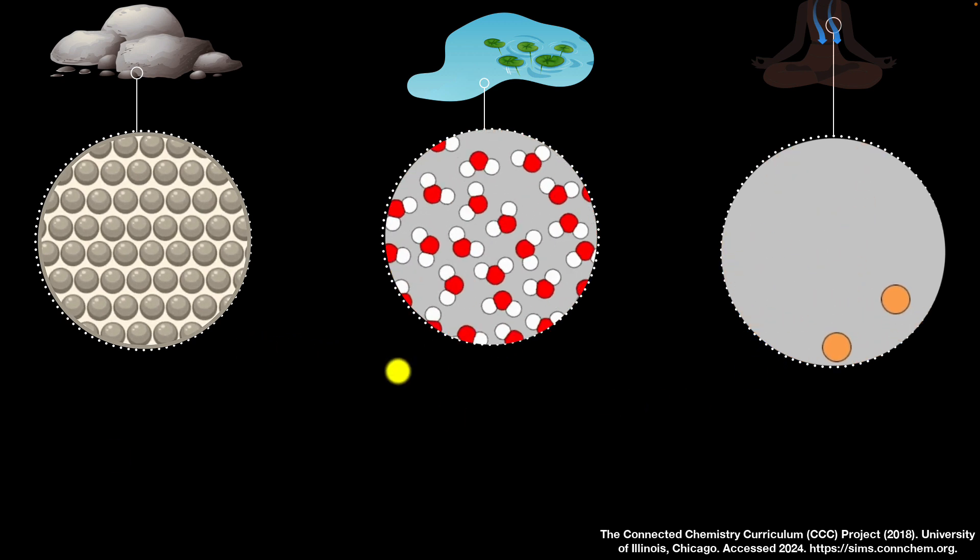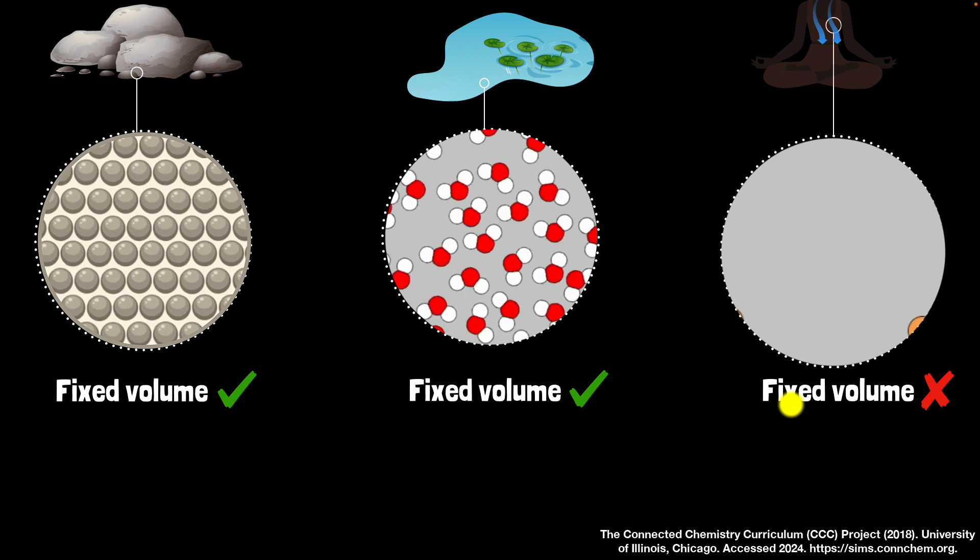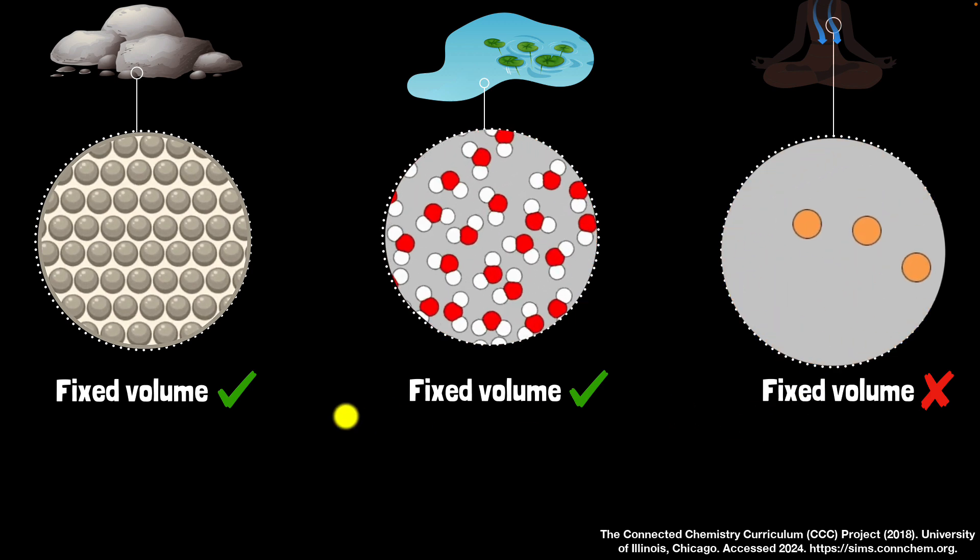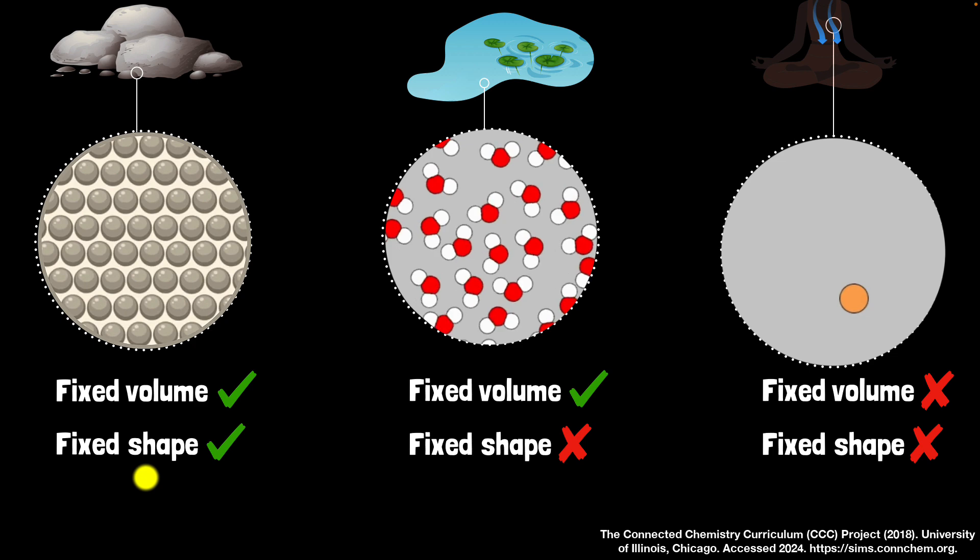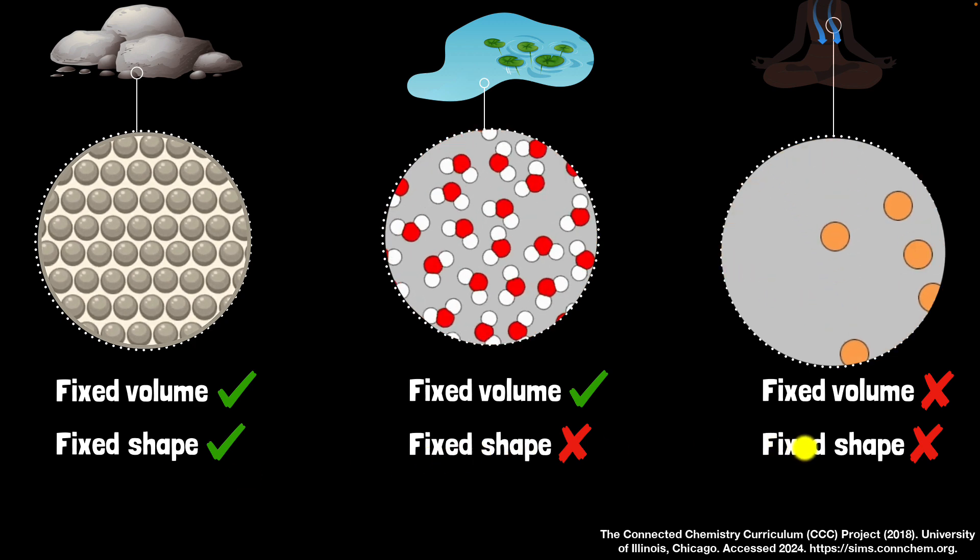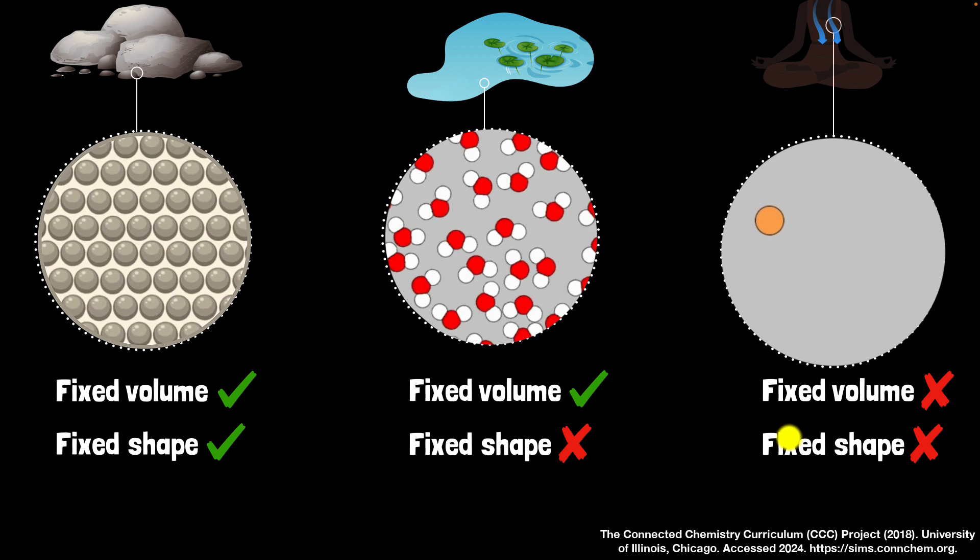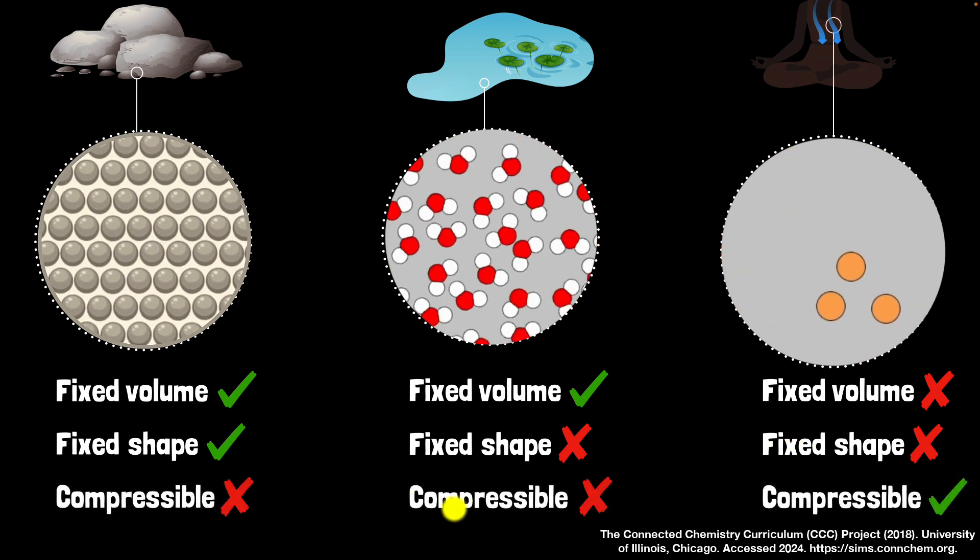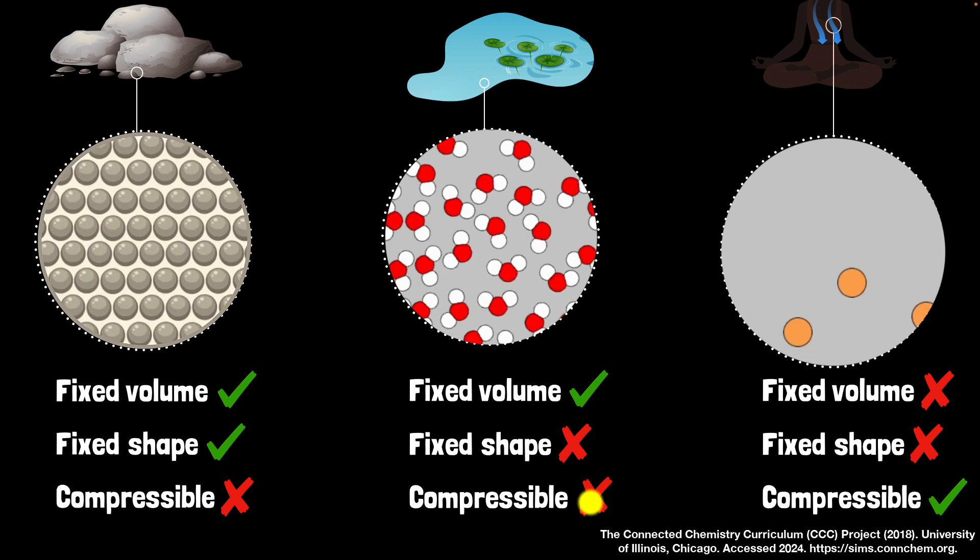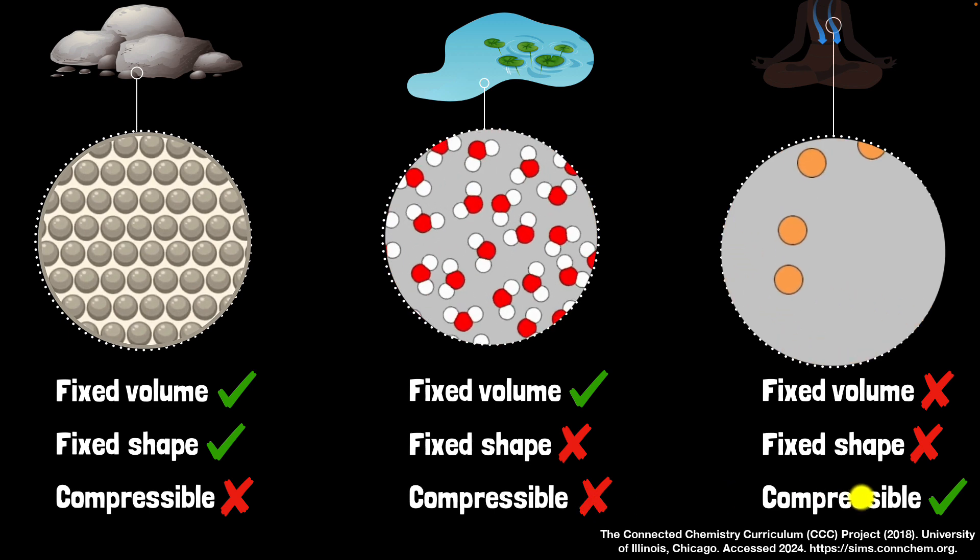What about their volumes? Well, solids and liquids have a fixed volume, but gases don't. They take the volume of the container. What about their shapes? Well, solids have a fixed shape. Liquids don't. They take the shape of the container. Even gases don't. They take the shape of the container. And what about their compressibility? Well, solids and liquids are pretty much incompressible. So you can't compress them. However, gases can be easily compressed.